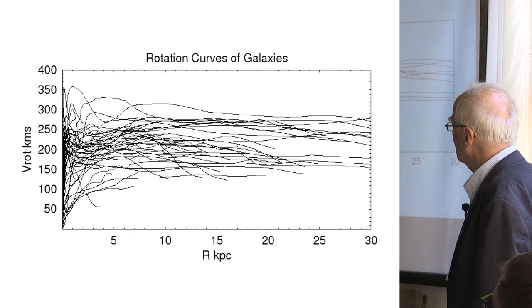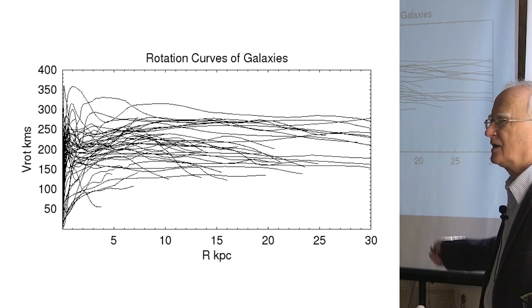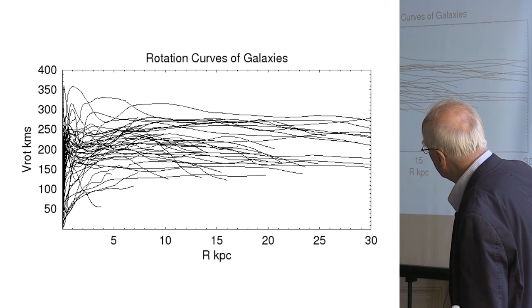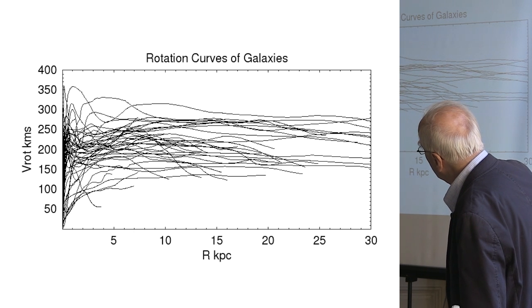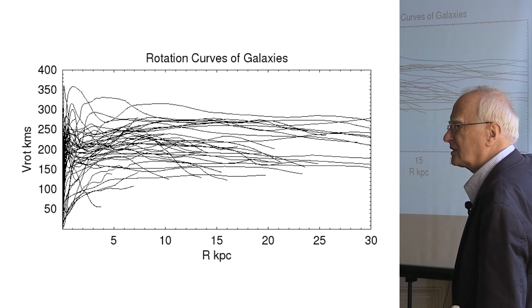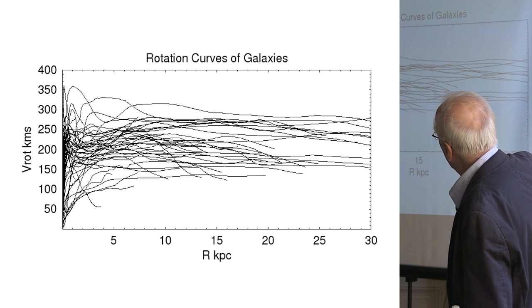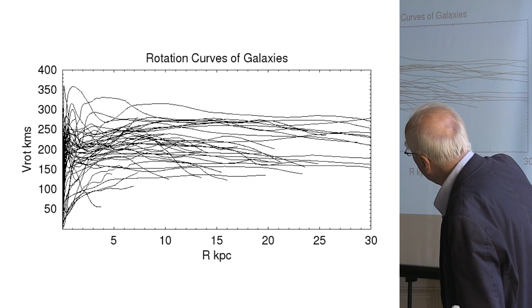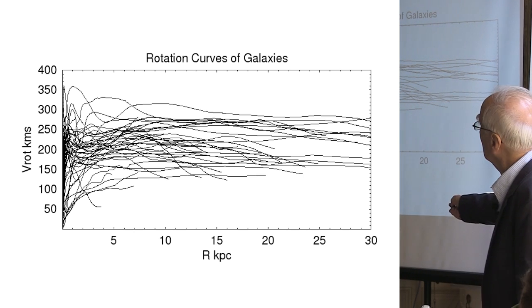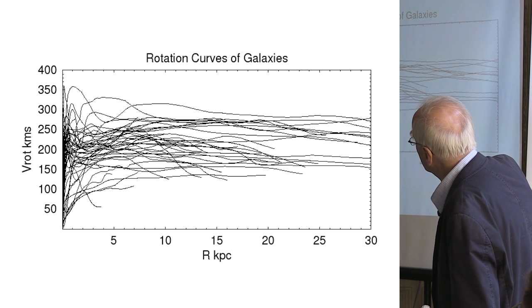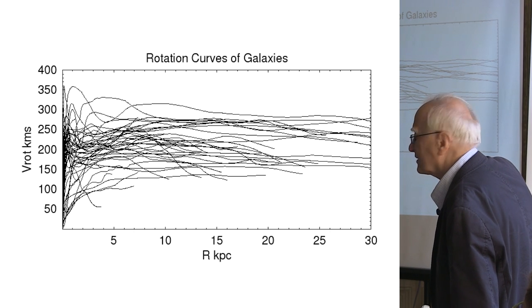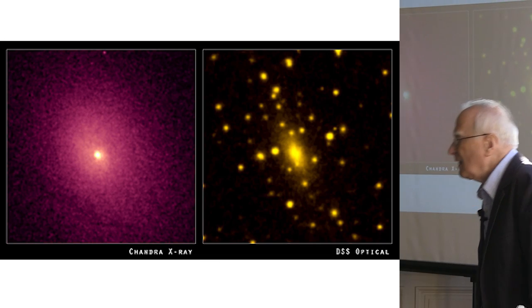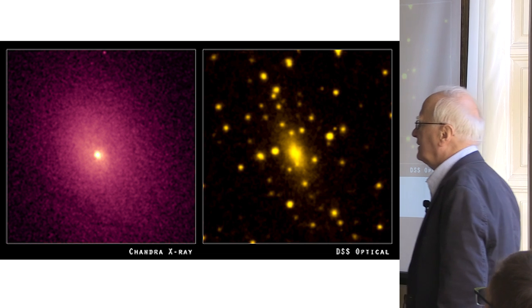Nowadays we have a lot of observations connected with rotational curves. Here is a collection for something like 50 different galaxies. What's important is that though there are some curves which tend to go down, the majority has this asymptotic flat region. The flat part is something between 300 and 150 kilometers per second, so there is not a big spread in the rotational velocities of galaxies.